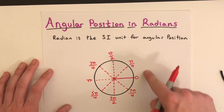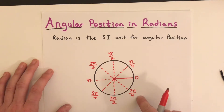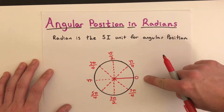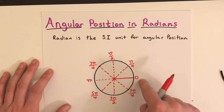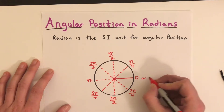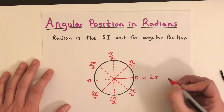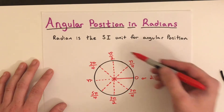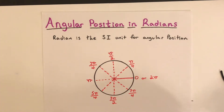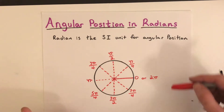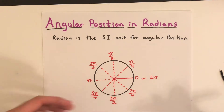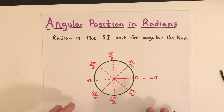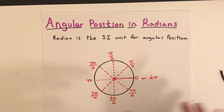Continuing all the way around, the position just before returning to the start is 7 pi over 4. Going all the way around gives us 8 pi over 4, which equals 2 pi. So a complete rotation is either 0 radians at the start or 2 pi when it completes the full circle. That's how you use radians to find the position of something around a circle.